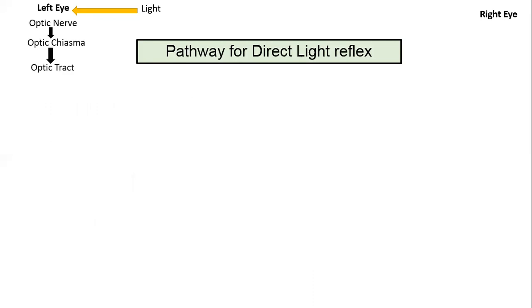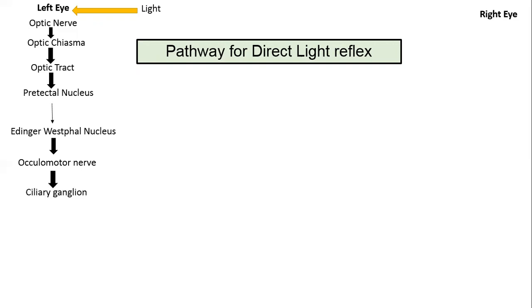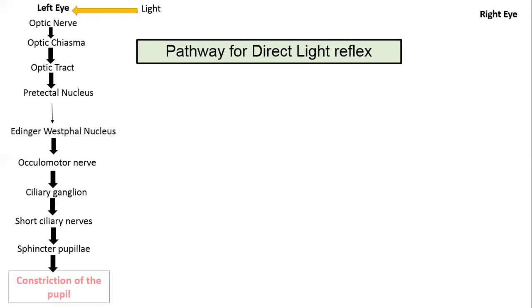Coming to the pathway of the direct light reflex: the light is shone onto the left eye and the information is carried by the optic nerve. The optic nerve fibers carry the impulses and, via the optic chiasma and optic tract, the fibers enter the midbrain via the brachium of the superior colliculus and terminate in the pretectal nucleus. From this nucleus, second-order neurons project to the Edinger-Westphal nucleus. From there, preganglionic fibers pass through the oculomotor nerve to the ciliary ganglion. The postganglionic fibers travel via the short ciliary nerves to the sphincter pupillae muscle, causing its contraction and resulting in constriction of the pupil in the same eye — the direct light reflex.